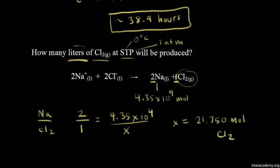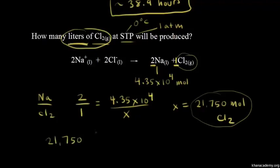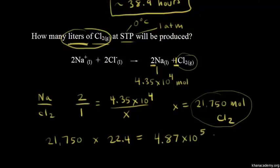To find liters of chlorine gas, we know that one mole of an ideal gas occupies 22.4 liters at STP. So we multiply 21,750 moles × 22.4 L/mol, which gives us 4.87×10⁵ liters of chlorine.